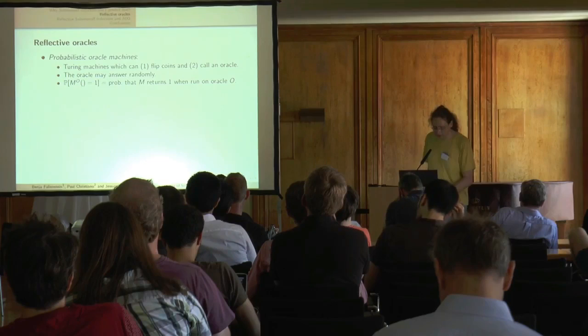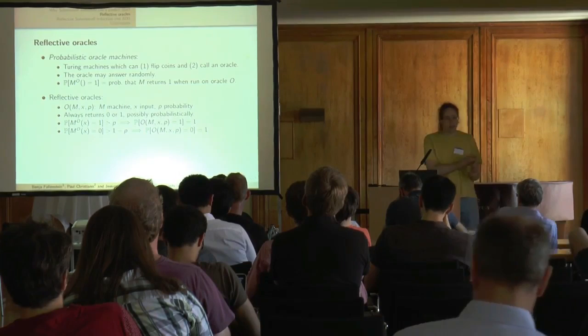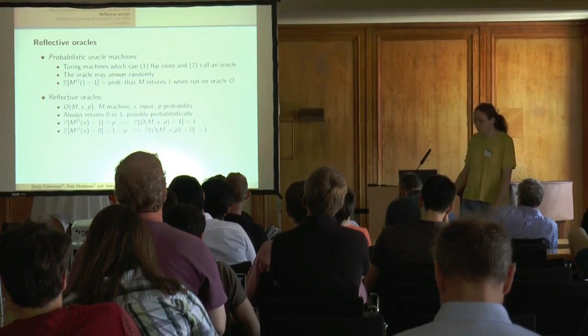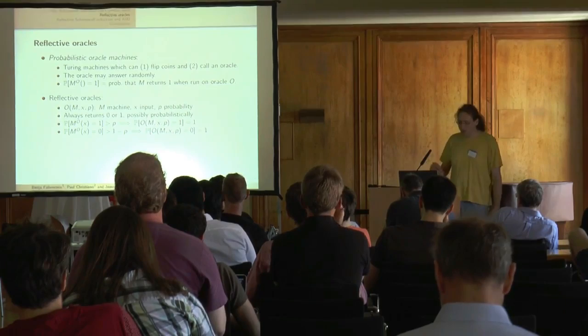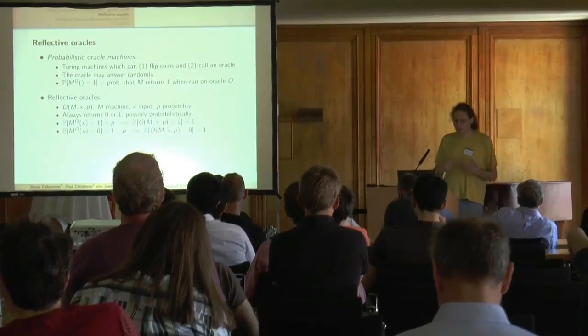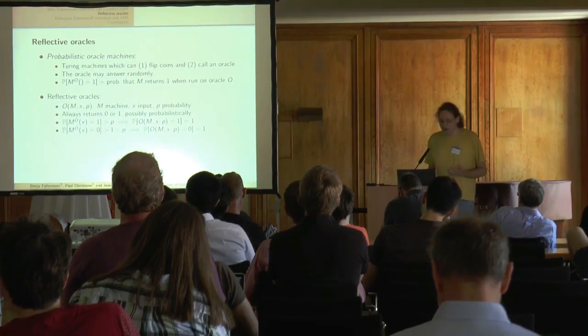A reflective Oracle takes three inputs: a machine, an input string to that machine, and a probability P. It asks: when I call this machine on this input, is the probability it returns 1 greater than P? The Oracle always returns either 0 or 1, and in some cases it's allowed to answer probabilistically. The rule is: if the probability that the machine returns 1 is actually greater than P, then the Oracle must return 1.